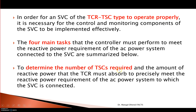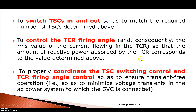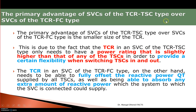The number of TSC branches needed is found from the controller — if total required is 40 KVAR and each TSC is rated at 10 KVAR, then four banks are needed. The TSC branches can be switched on and off, which was not available in TCR-FC. Then the TCR firing angle is determined, and coordination of both TCR and TSC control is required. That concludes the discussion on TCR-TSC. Advantages and disadvantages will be covered in the next session.